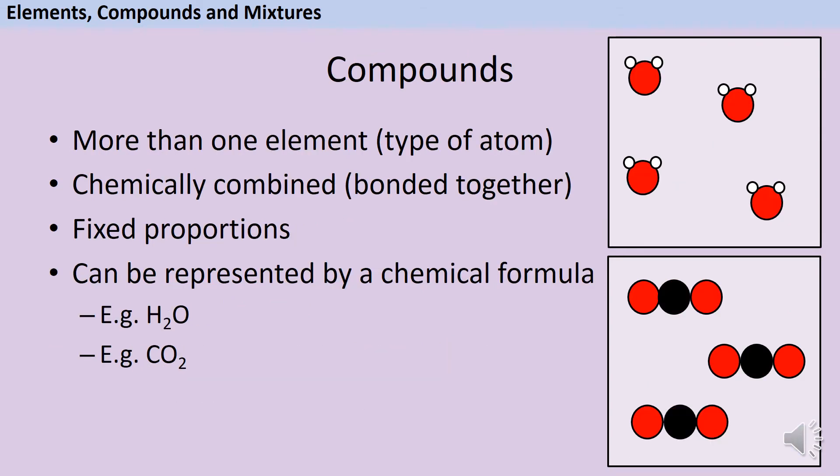There are only about 100 elements, but there are millions of compounds. And these are made when different elements start to bond together. So to be a compound, a substance must include more than one element, so more than one type of atom, here represented by the different coloured circles. And these must be chemically combined, which means bonded together, sort of the chemistry version of being stuck together with superglue.